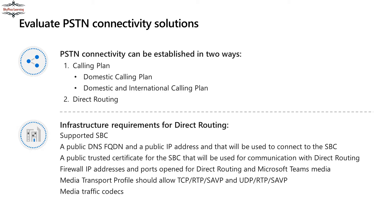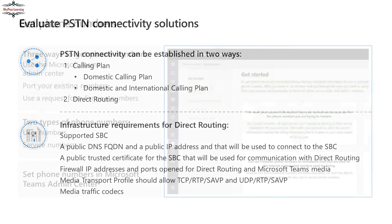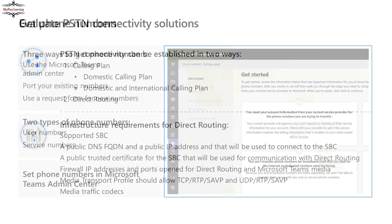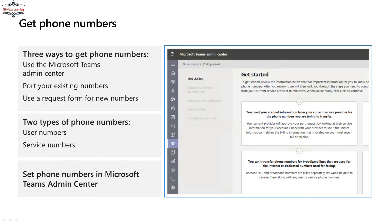First identify your SBC, then it must be published and associated. To get a phone number you can check from the Teams admin center. There are three ways: use Microsoft Teams admin center directly, port your existing number, or request a form for a new number. Numbers can be categorized as user-level or service-level and can be set up in Microsoft Teams.